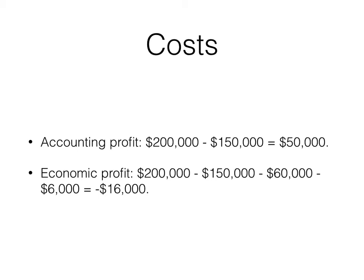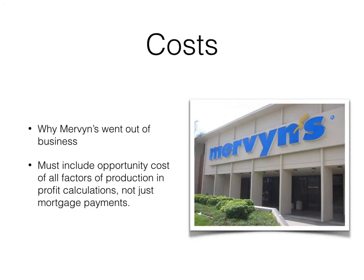We're assuming Nick is indifferent between running the restaurant and his other job. If he had a greater preference for running the restaurant, there would be a different scenario. Why is this important? Think about Mervin's and why Mervin's went out of business. Mervin's was a retailer on the West Coast that sold mostly clothes.